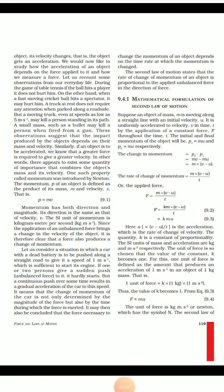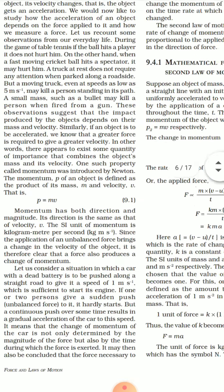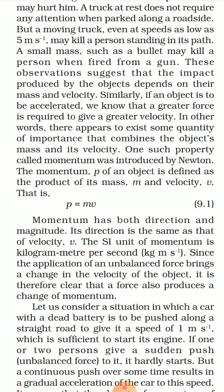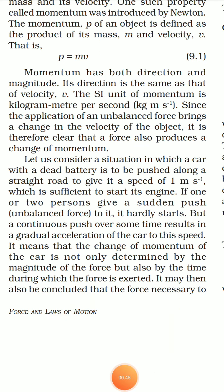In our previous video we understood momentum of any object. Momentum is denoted by the letter p, and its definition is that it is the product of mass and the velocity of any object, whether in motion or at rest. If any object is at rest, having any mass, the momentum will be m into v, but since velocity is zero at rest, momentum will also be zero.